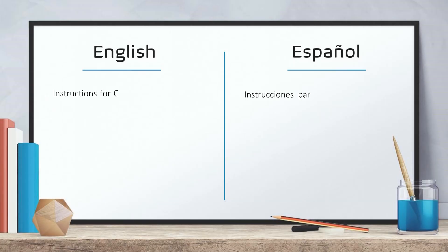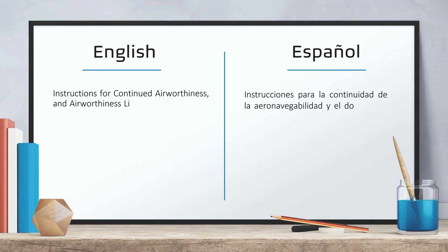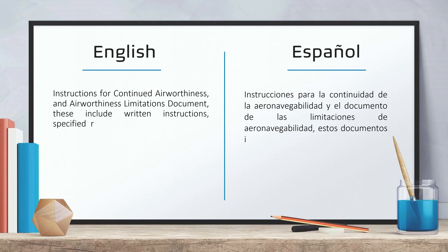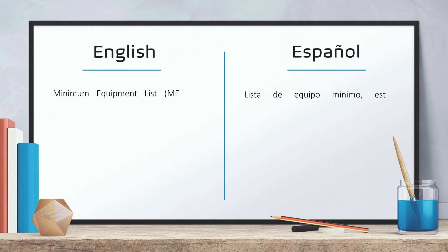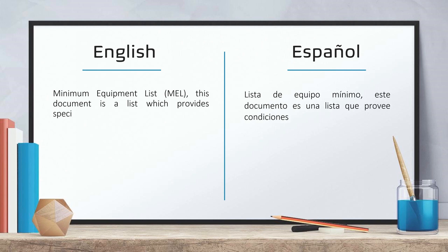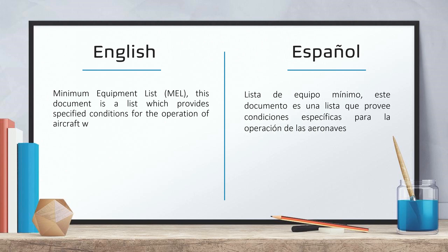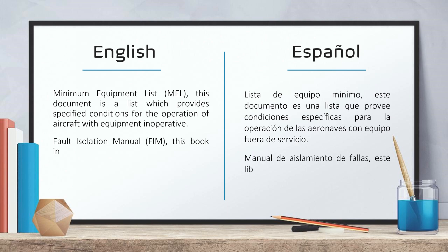Instructions for continued airworthiness and airworthiness limitations document — these include written instructions, specified requirements, procedures and standards to keep the aircraft airworthy. Minimum equipment list — this document is a list which provides specified conditions for the operation of aircraft with equipment inoperative.